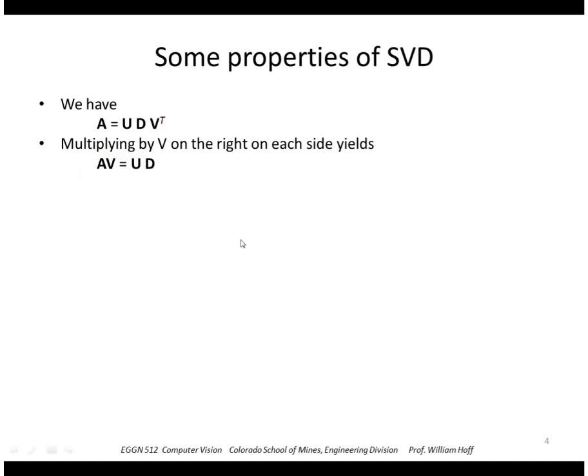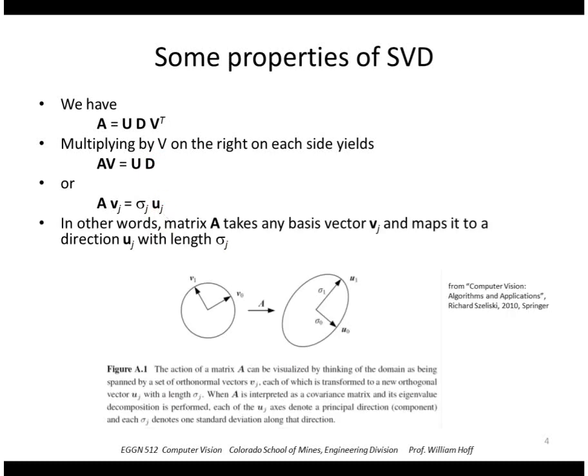So thinking of the matrix V as composed of a bunch of column vectors v_j, we see that we apply A to each column vector v_j and we get σ_j out of this diagonal matrix D times the corresponding column vector out of U. So an intuitive way to look at this is that matrix A takes any basis vector v_j and maps to direction u_j with length σ_j. So we'll see later in the course that this is useful in some other applications.